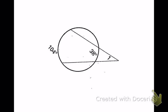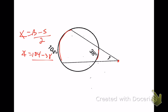Try the next one. The vertex is outside, so use the vertex outside formula: angle equals big minus small divided by two. The big arc inside the angle is 104, the small arc inside the angle is 38, divided by two. Subtracting gives 66 divided by 2, which equals 33 degrees.